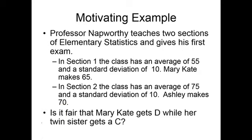We'll start with a motivating example. Professor Napworthy teaches two sections of an elementary statistics class and gives his first exam. In section one, the class has an average of 55 and a standard deviation of 10, and his student Mary Kate makes a score of 65. In section two, the class has an average of 75 and a standard deviation of 10, and Ashley makes a 70. Is it fair that Mary Kate gets a D while her twin sister gets a C?